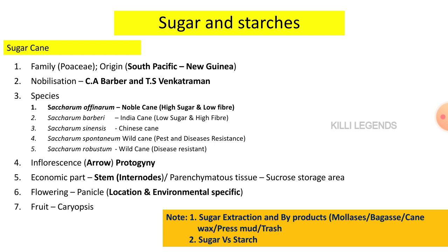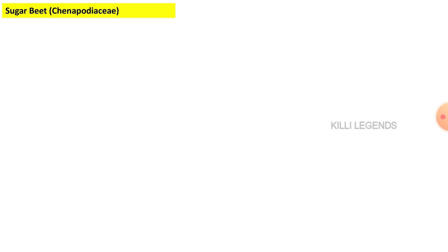There is a Sugarcane Breeding Institute established for sugarcane research. The TNA crossing program and hybrid season program are implemented here. The sugarcane industry makes India the largest agro-based industry, and sugarcane is a major crop in production.